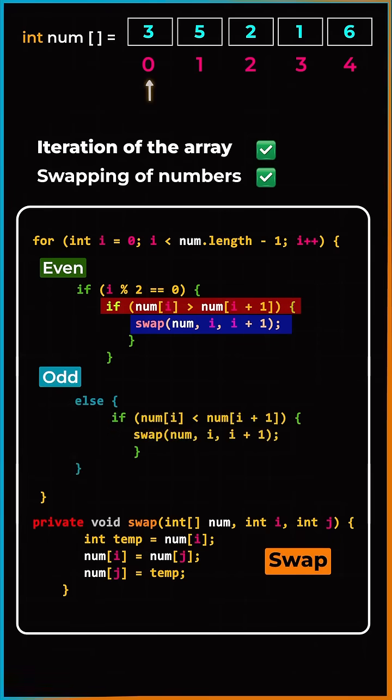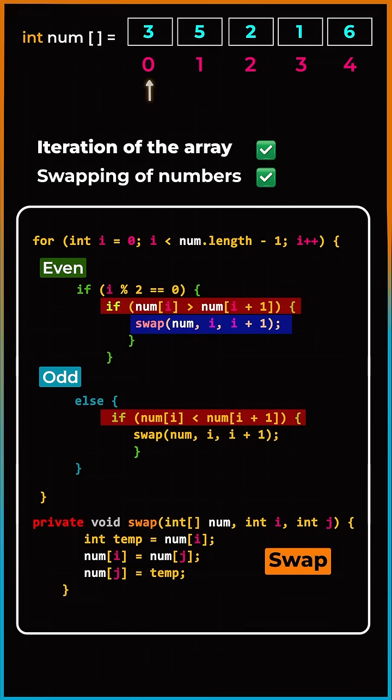Similarly, for all odd indices, if the current value is less than the next one, we will do the swap.